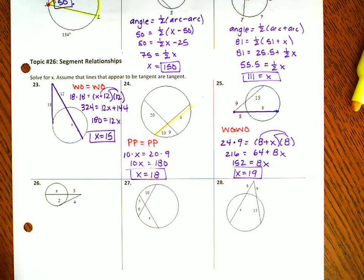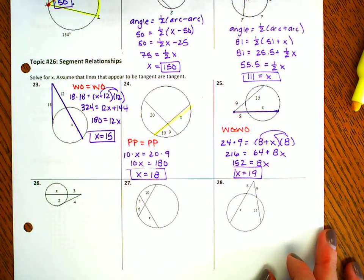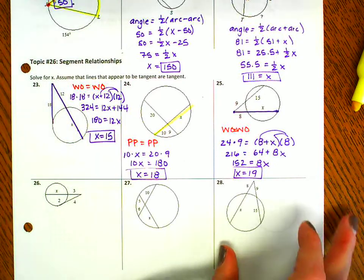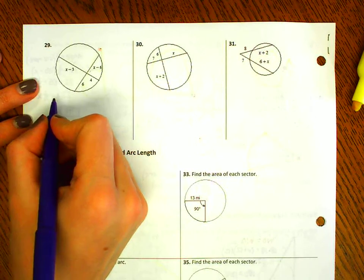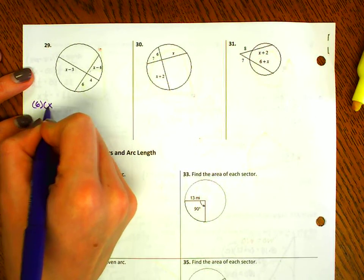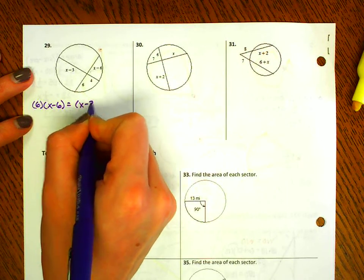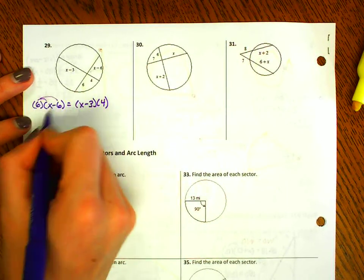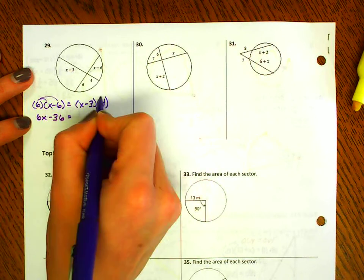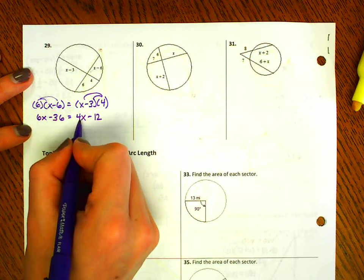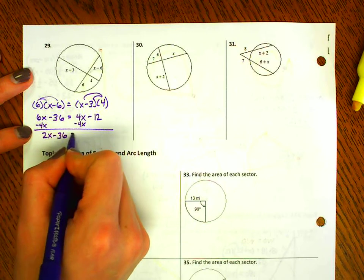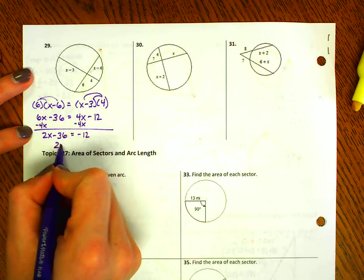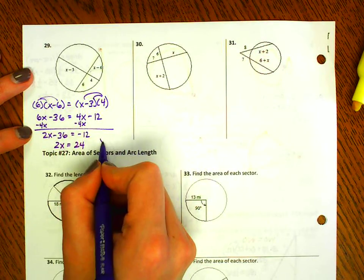I think we've done a good job practicing for these. You guys can do 26, 27, and 28 by yourself — there's a key on Blackboard to check your answers. Let's do number 29 together. This is a PP problem because everything's on the inside. Part times part equals part times part. Distributing the 6 gives 6x minus 36, and distributing the 4 gives 4x minus 12. Subtracting 4x on both sides gives 2x minus 36 equals negative 12. Adding 36 to both sides, then dividing by 2 gives the answer.